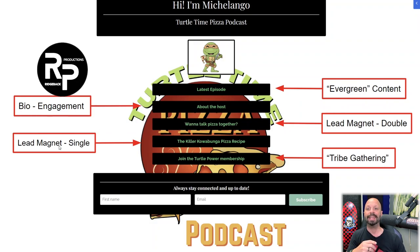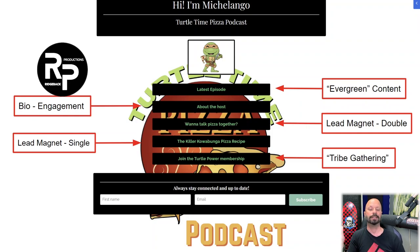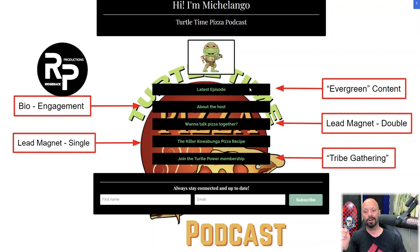The fourth link is a single lead magnet — the Killer Cowabunga Pizza Recipe, which could be whatever lead magnet you have available in your link in bio. Then there's the Join the Turtle Power Membership — your community, whether free or pay-to-join, where all your audience can come together, talk about your show or your product, and you drop in to do video chats and keep them engaged. Now, out of those five links, how many are going to be an opt-in? The evergreen content is not — it just links them to your podcast and new episodes.